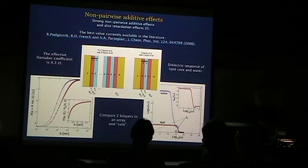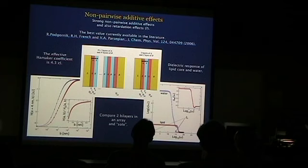There are very few cases where you can calculate the contribution of non-pairwise additive effects explicitly. There's a well-known Axilrod-Teller formula for interaction between three particles, which is not the sum of the interactions of pairs. The other case is the exact resummation of the interaction between two layers in an infinite array of other layers.